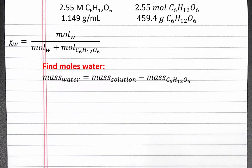We can find the mass of water by rearranging our mass of solution equation to solve for water. We already solved for the mass of glucose, so now let's find the mass of solution.